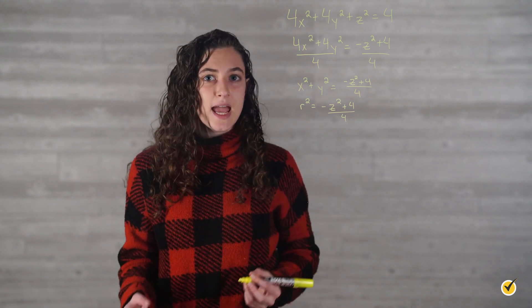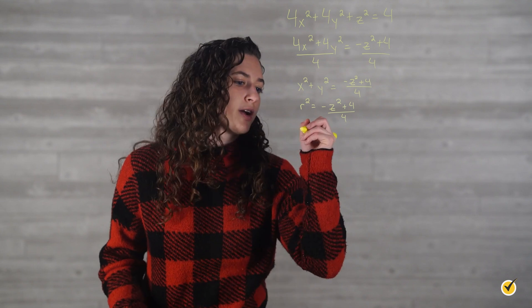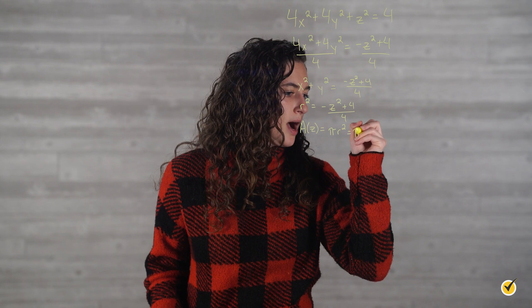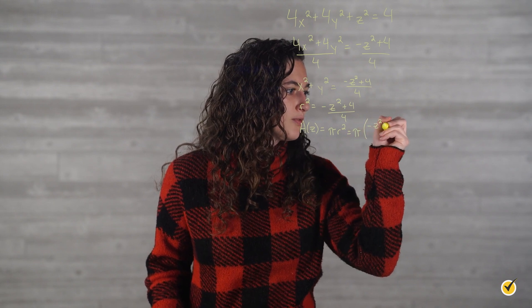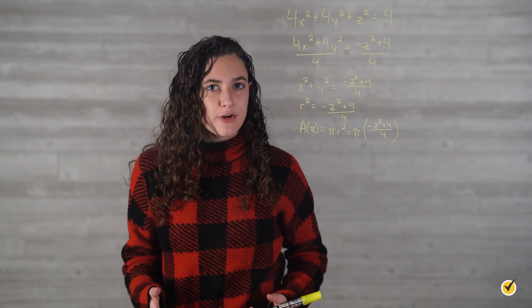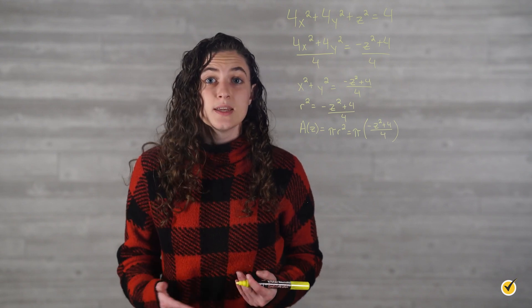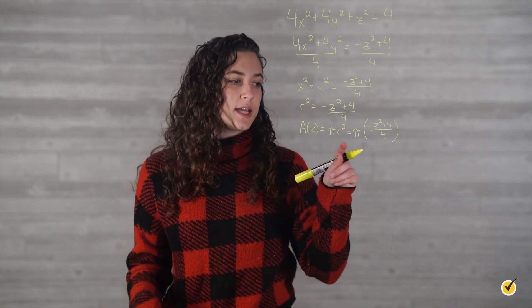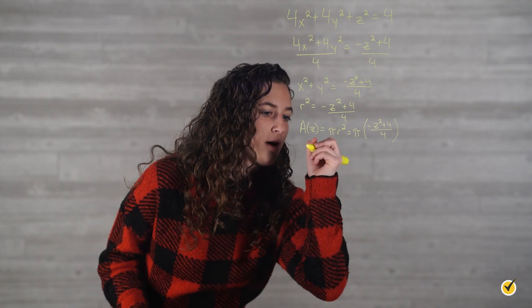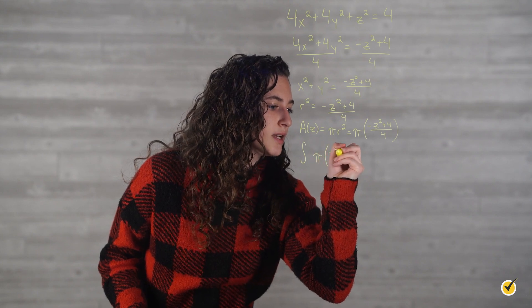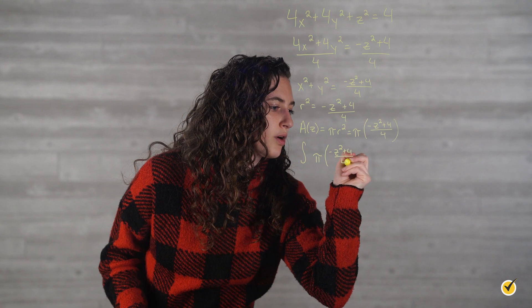We can use this to write the area function in terms of z. Our area formula in terms of z is equal to pi r², and since r² equals (negative z² plus 4) over 4, we substitute that in and get pi times (negative z² plus 4) over 4. This function represents the area of the cross-section of the circular slices of the ellipsoid. Now we can build the definite integral to obtain the volume of the ellipsoid: the integral of pi times (negative z² plus 4) over 4 dz.